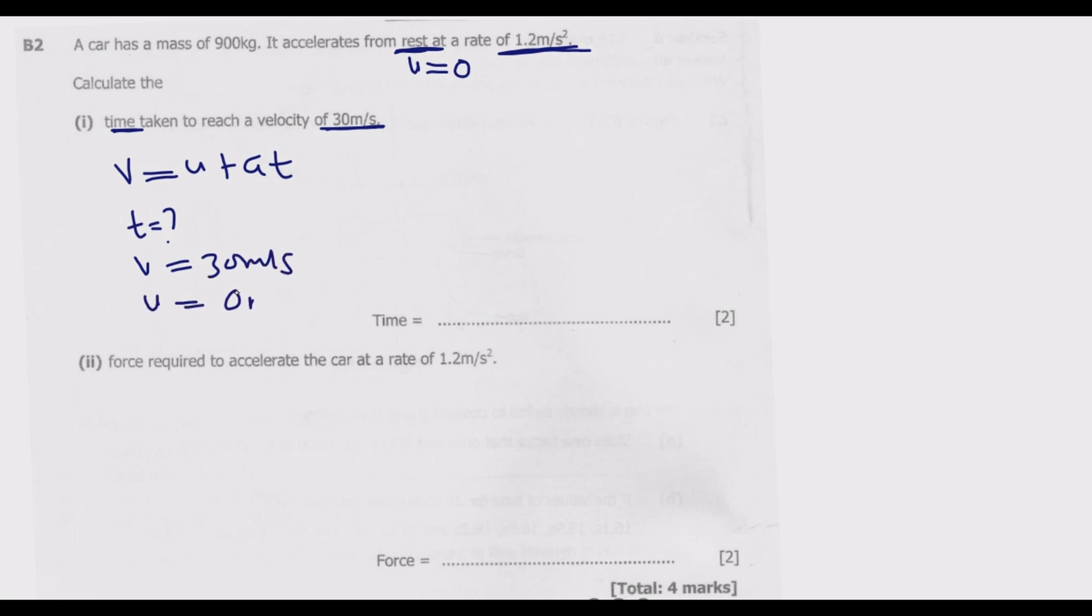Then we know acceleration is equal to 1.2 meters per second squared. So it's just a matter of substituting. Final velocity is 30, then initial is zero, then plus acceleration is 1.2.